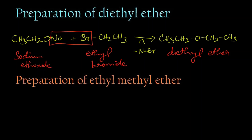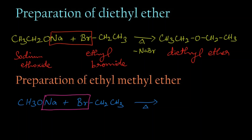Now we are going to prepare ethyl methyl ether. In the same way, we take sodium methoxide, CH3ONa, and react it with ethyl bromide. On heating, sodium bromide (NaBr) is released and we get CH3OCH2CH3, that is ethyl methyl ether.